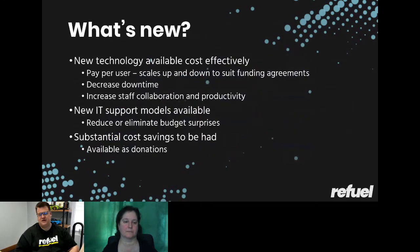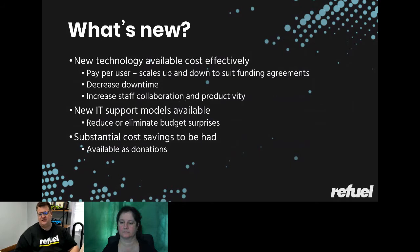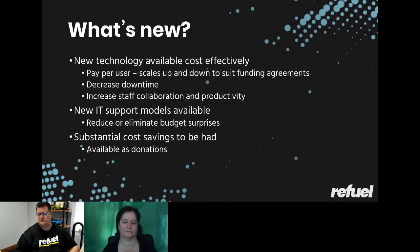Let's talk about what's new and what's changing with budgets. There is new technology available to help with cost-effectiveness. The biggest thing is pay-per-user licensing, which allows us to scale pricing up and down to suit our funding agreements. If a program comes to an end and staff contracts finish, you're not stuck with additional licenses — we can drop those costs back down until a new funding agreement comes in.